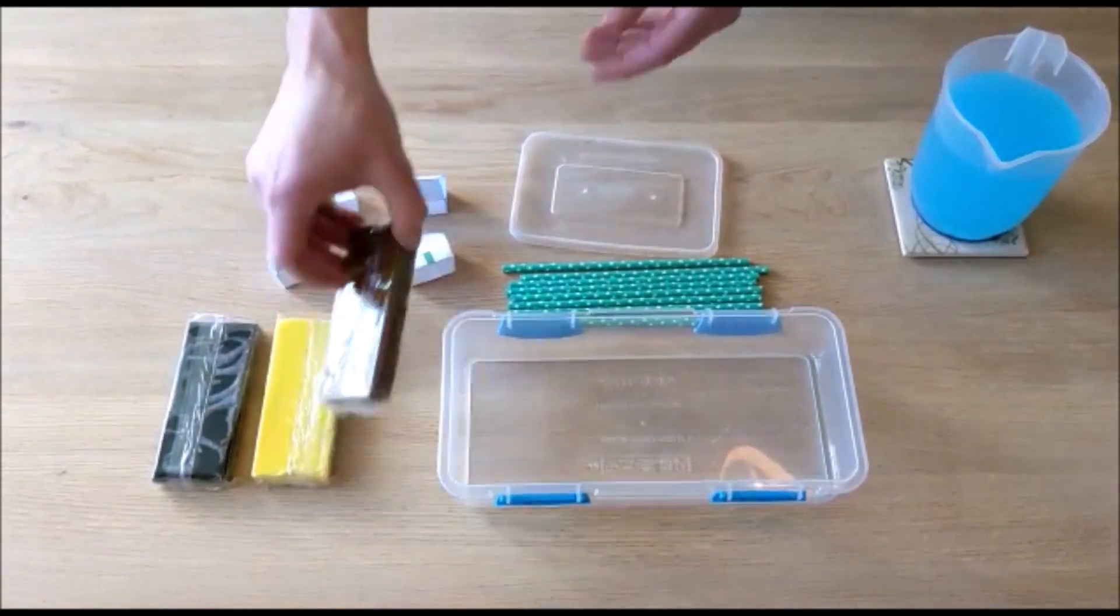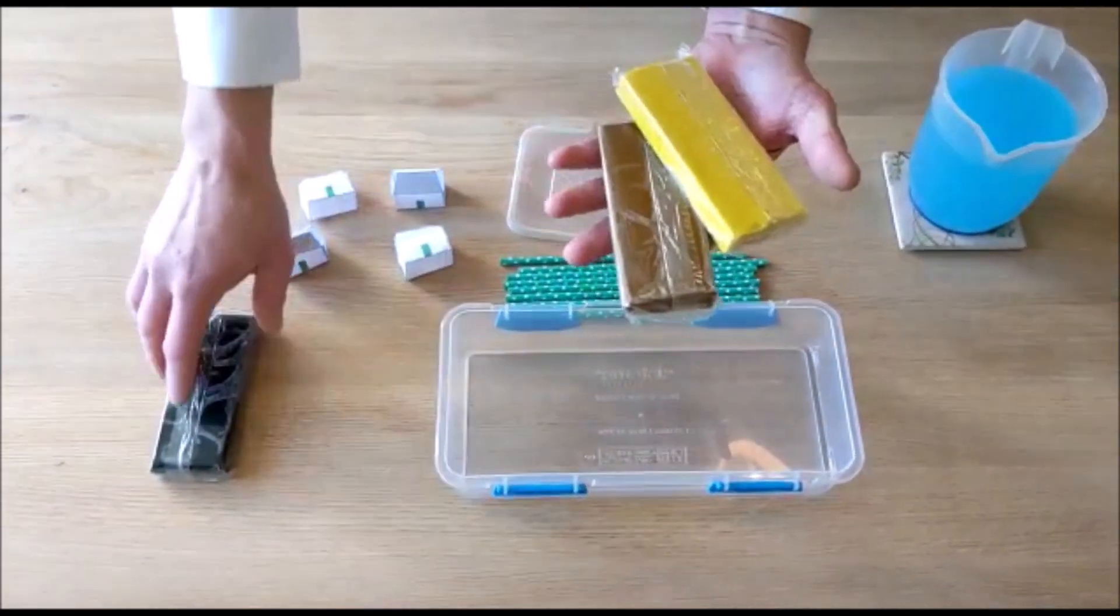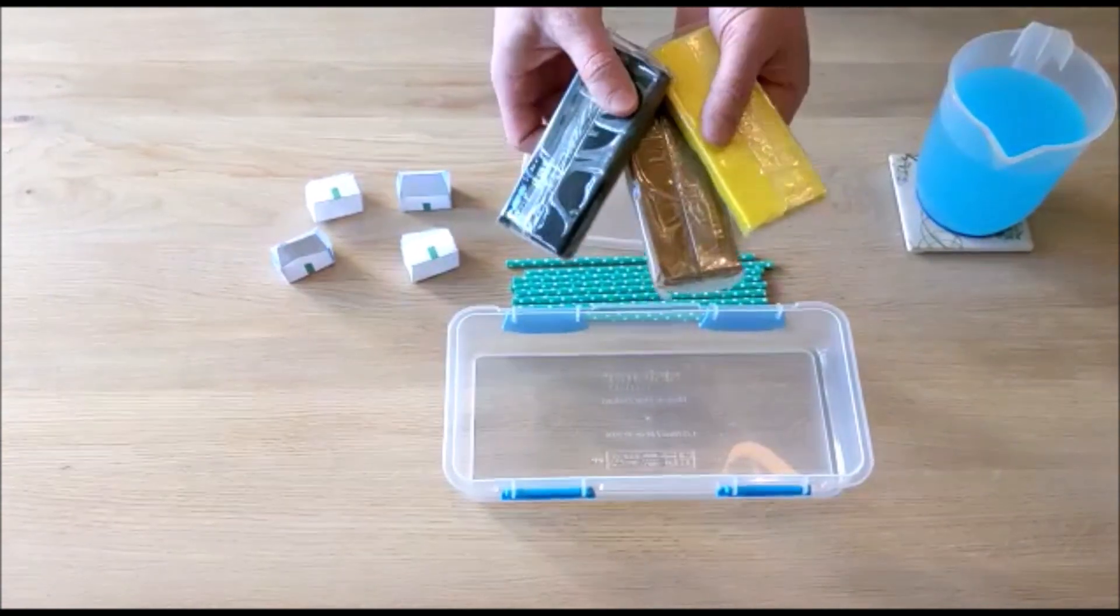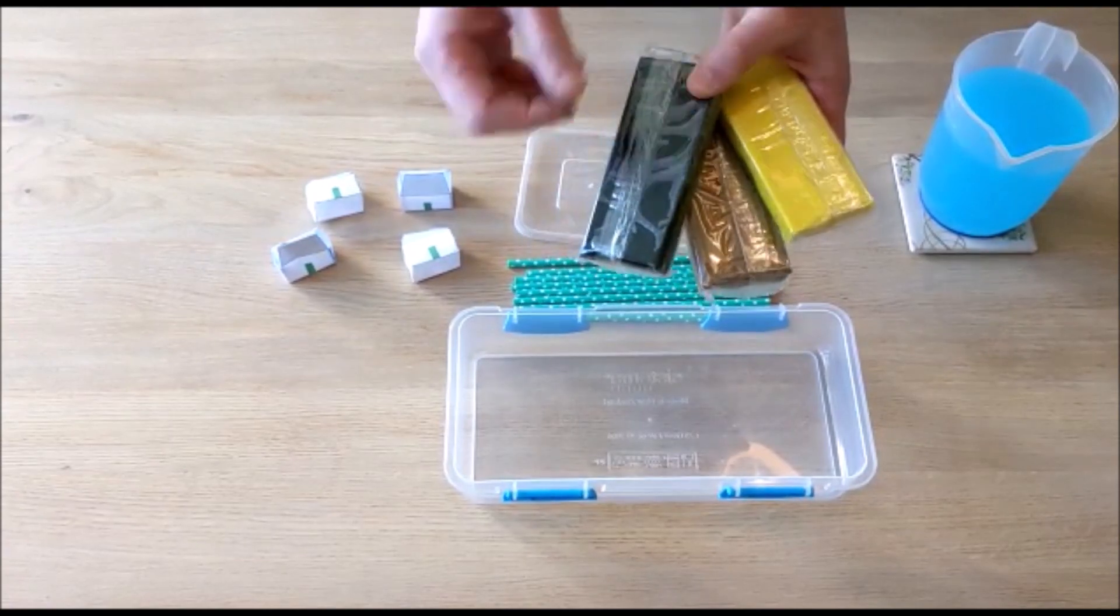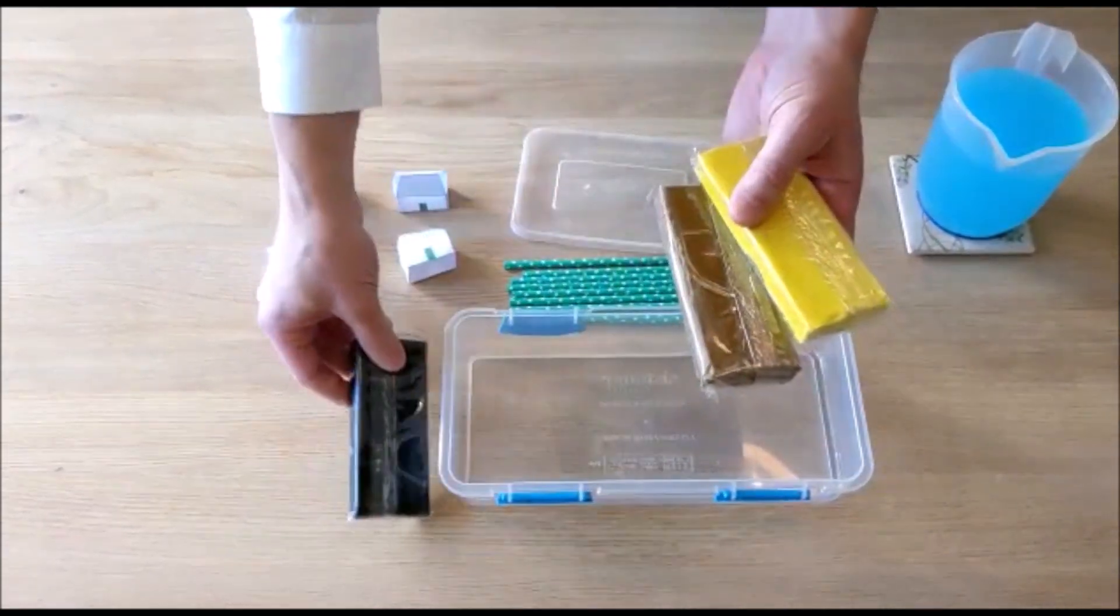Then in order to make your engineered structures you'll need some modelling clay like plasticine. Now it's useful to have different colours so you can pick out different features in your engineered structures like embankments or sea walls.